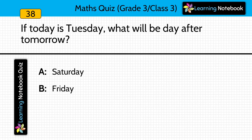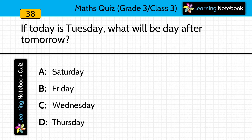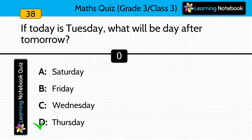If today is Tuesday, what will be the day after tomorrow? Options: Saturday, Friday, Wednesday, or Thursday? Answer is Thursday. If today is Tuesday, tomorrow will be Wednesday and the day after Wednesday will be Thursday.